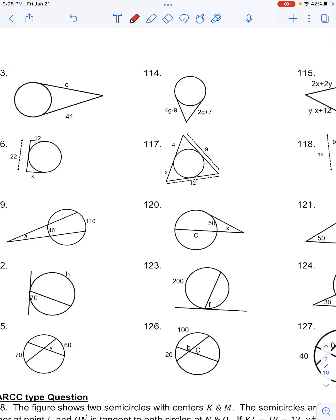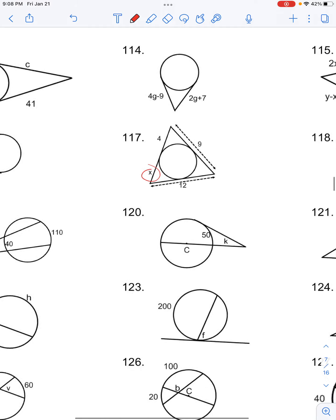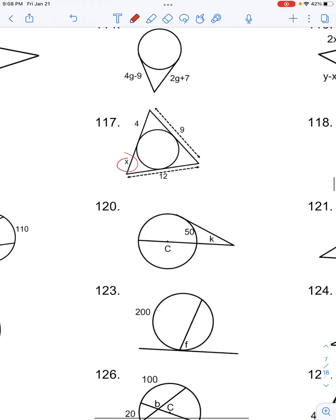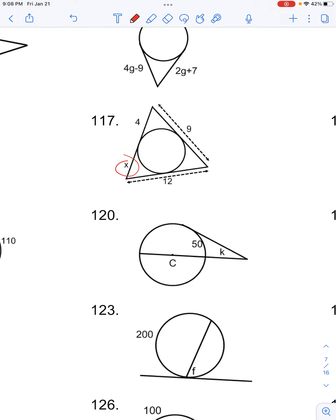Number 117 in your class for circles asks you to solve for the missing variable. So we have a missing variable of x. Here we have three sets of tangent lines that come to the same external points.